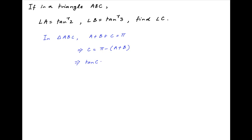Taking the tangent of both sides, we get tan of C is equal to tan of pi minus brackets A plus B. Now, tan of pi minus an angle is equal to minus of the tan of the angle. Therefore, the right-hand side is equal to minus of tan of A plus B.